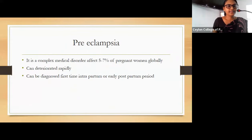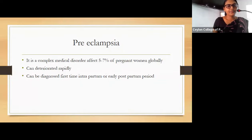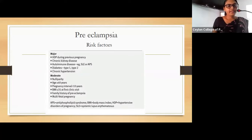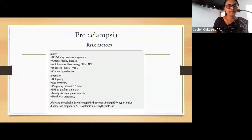Preeclampsia is a complex medical disorder affecting five to seven percent of pregnant women globally and can deteriorate rapidly. Therefore we should identify patients early and manage properly. It can be diagnosed first time intrapartum or in the early postpartum period. Major risk factors include hypertension during a previous pregnancy, chronic kidney disease, autoimmune diseases like SLE or antiphospholipid syndrome, type 1 or type 2 diabetes, and chronic hypertension.